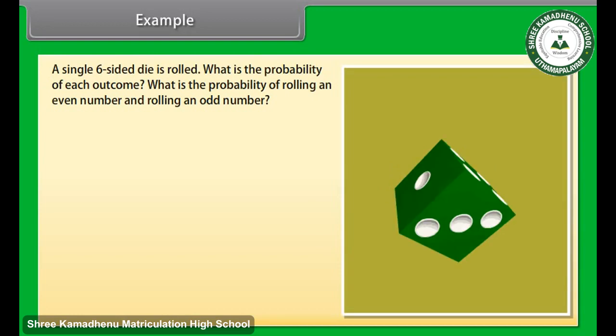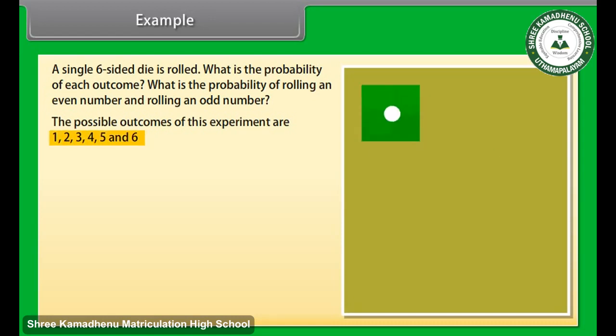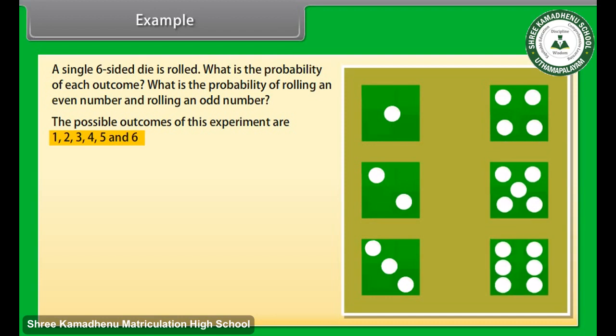A single six-sided dice is rolled. What is the probability of each outcome? What is the probability of rolling an even number and rolling an odd number? The possible outcomes of this experiment are 1, 2, 3, 4, 5, and 6. Now let's find probabilities. Probability of 1 is number of ways to roll a 1 by total number of sides, which is equal to 1 by 6.